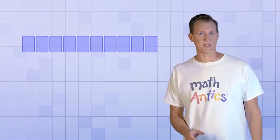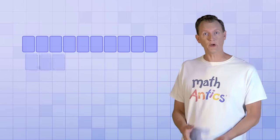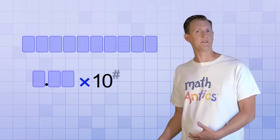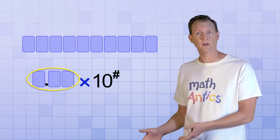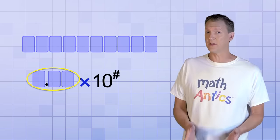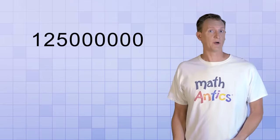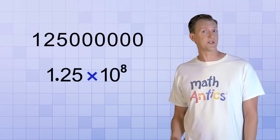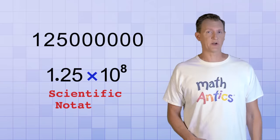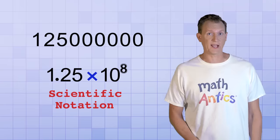Instead of using a long sequence of decimal digits to represent numbers, scientific notation uses a shorter number multiplied by a power of 10. And it's always in that form — some number times 10 to the some exponent. Here's an example of a really long number: 125 million. And here's the equivalent number written in scientific notation: 1.25 times 10 to the 8th.